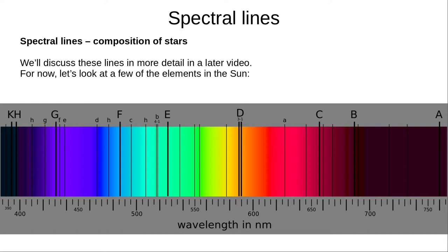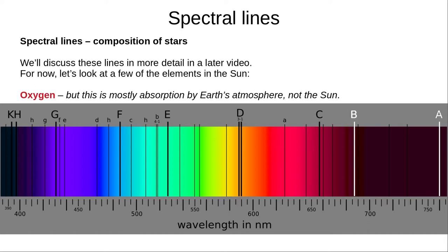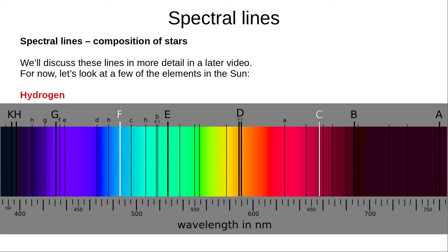For now, let's look at some of the elements in the Sun. These absorption lines indicate oxygen. These lines are mostly due to absorption by the Earth's atmosphere, but there is some oxygen in the Sun. The Sun is mostly hydrogen, indicated by these two lines. The Sun is about 98% hydrogen and helium.